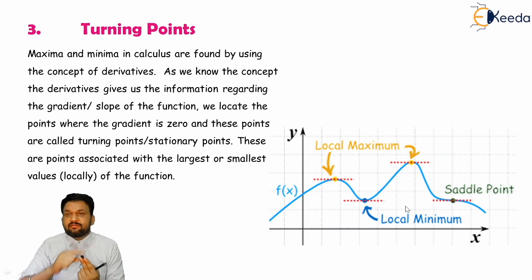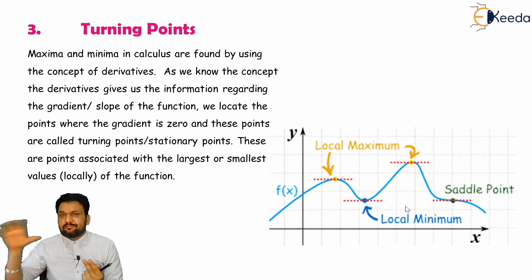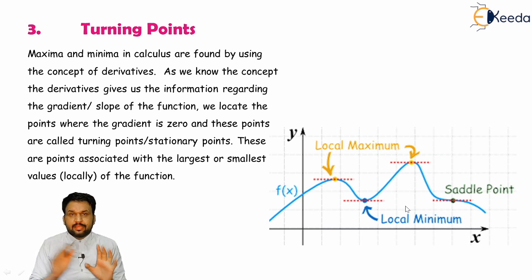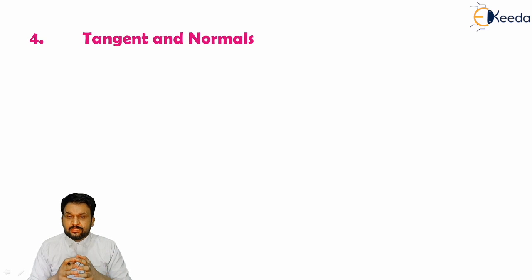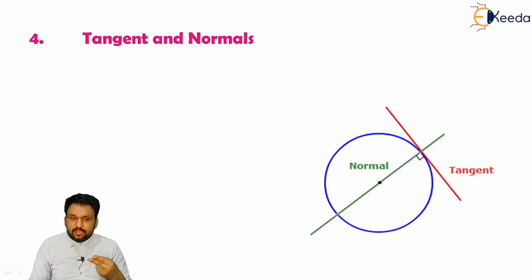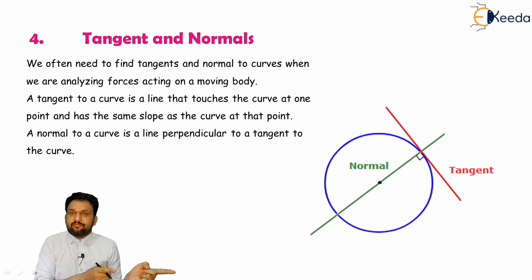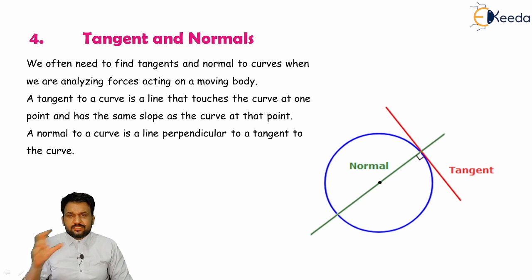We use the first derivative and the second derivative as the methodology to find local minima, maxima, and stationary points. So turning points can be found with the help of derivatives. The fourth part is tangents and normals — we can easily calculate the tangent as well as the normal with the help of derivatives. To find tangents and normals we need to calculate the slope, and the slope is always given by the derivative.